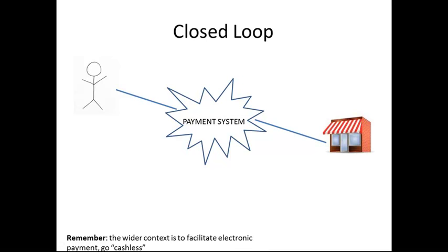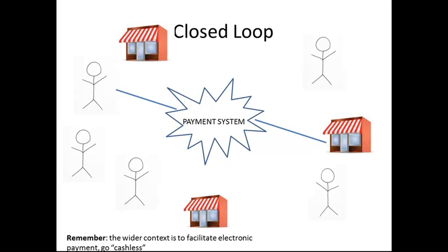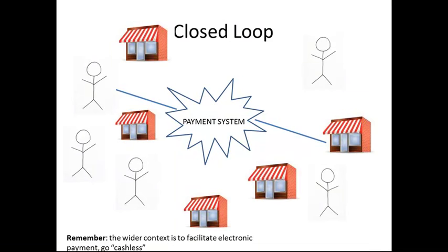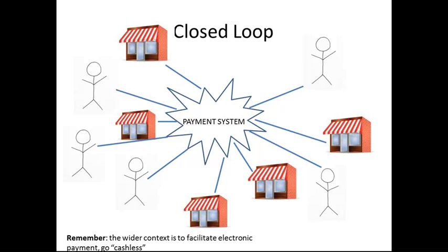The problem is we live in a world with lots and lots of people and lots and lots of merchants. So if you're a closed-loop payment system, you have to individually sign up all the merchants and all the customers yourself. This seems like a lot of work — so why would anybody bother? Well, there are some terrific advantages. It doesn't have the same scale as an open-loop system, but the advantage is you get total control — total control of everything, of the relationship with the consumer and the merchant and all the data that's going back and forth between them.